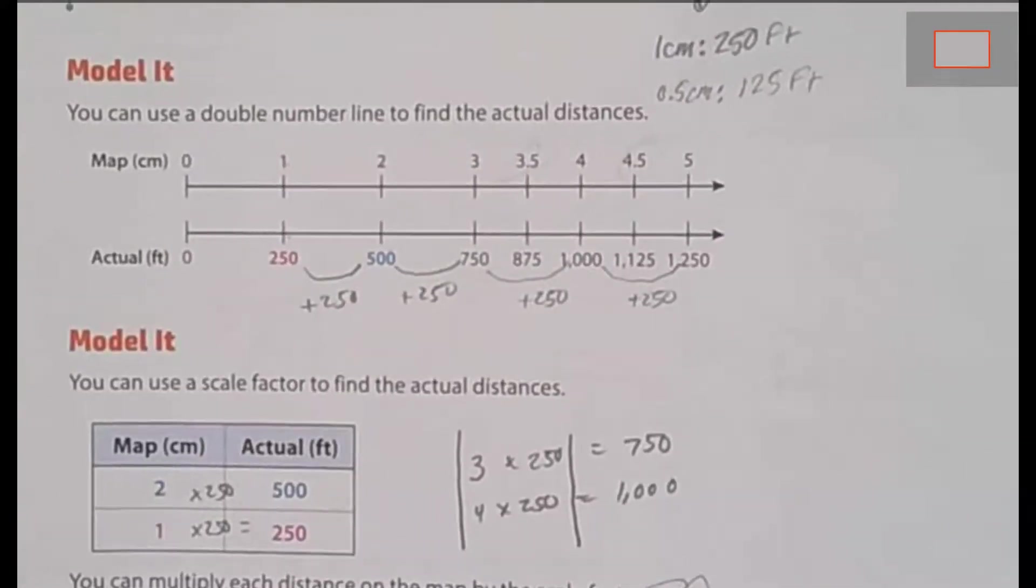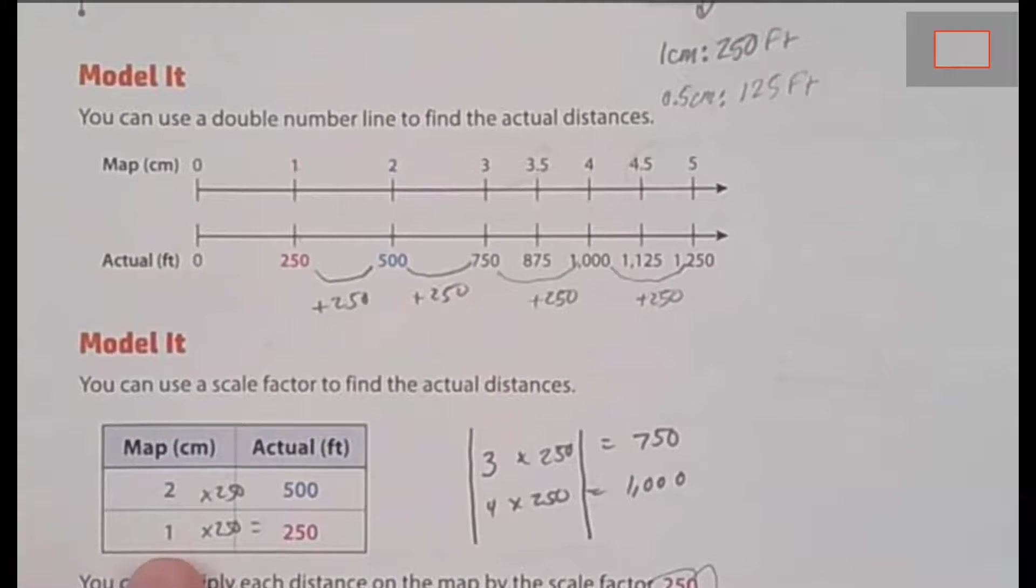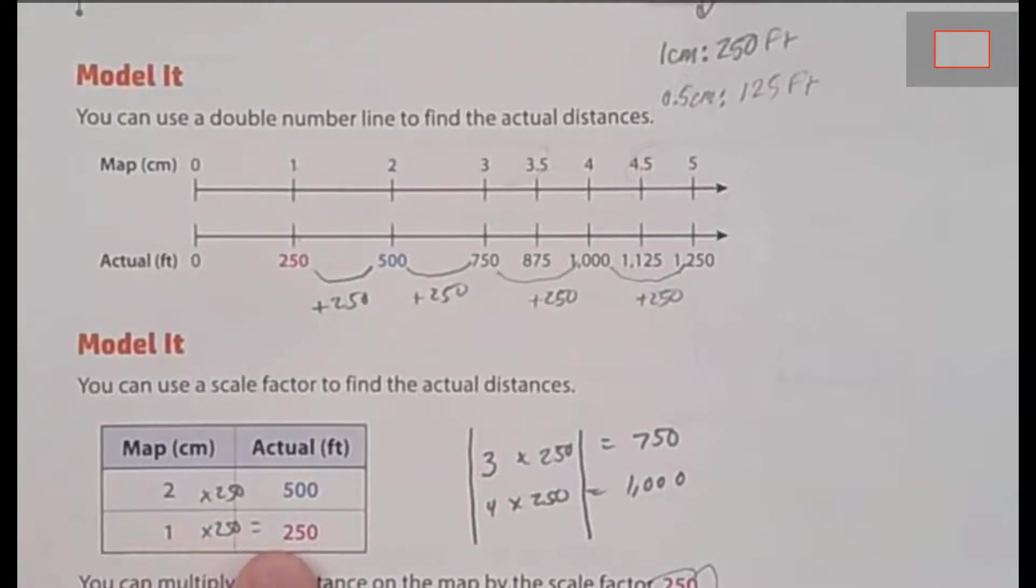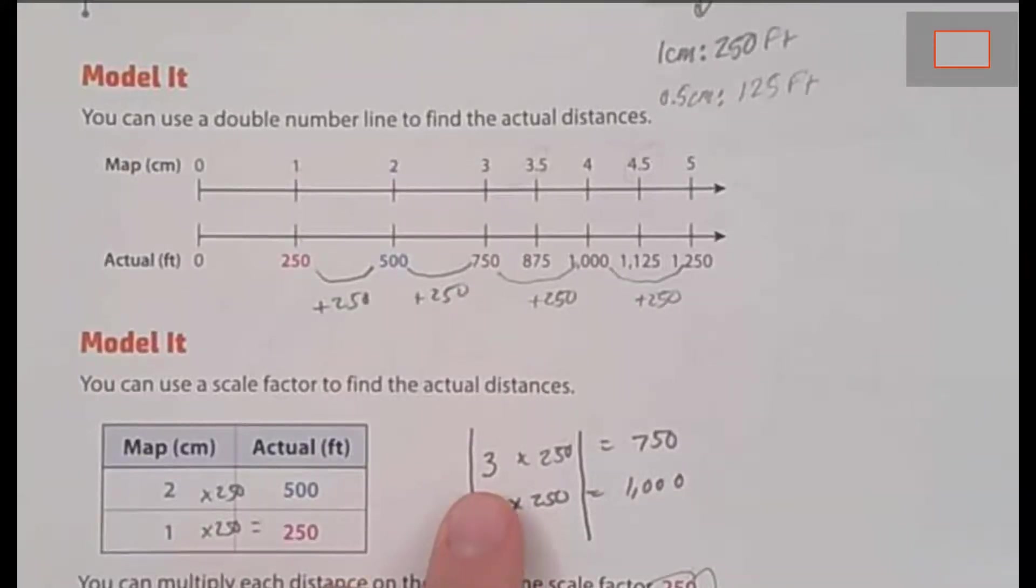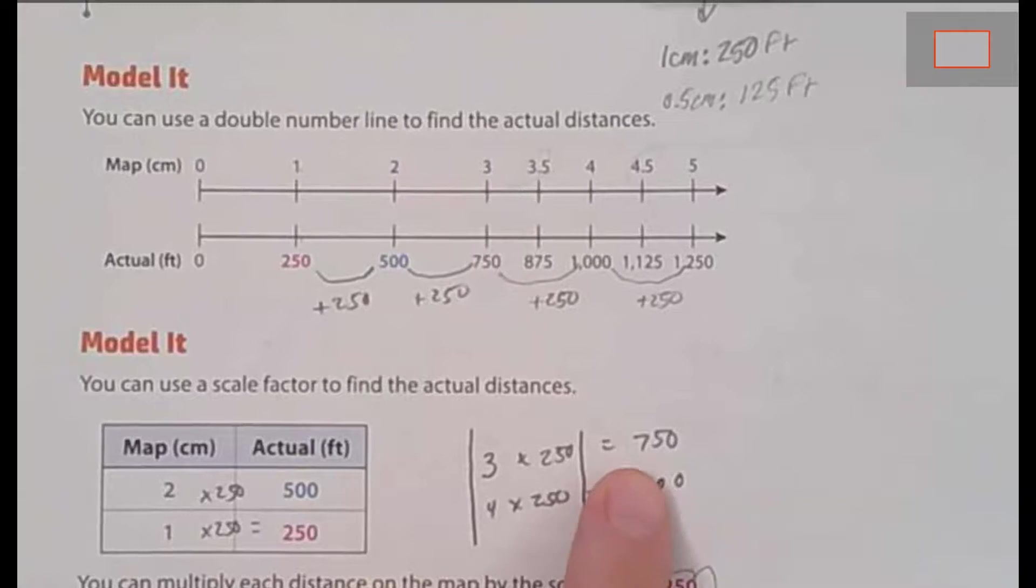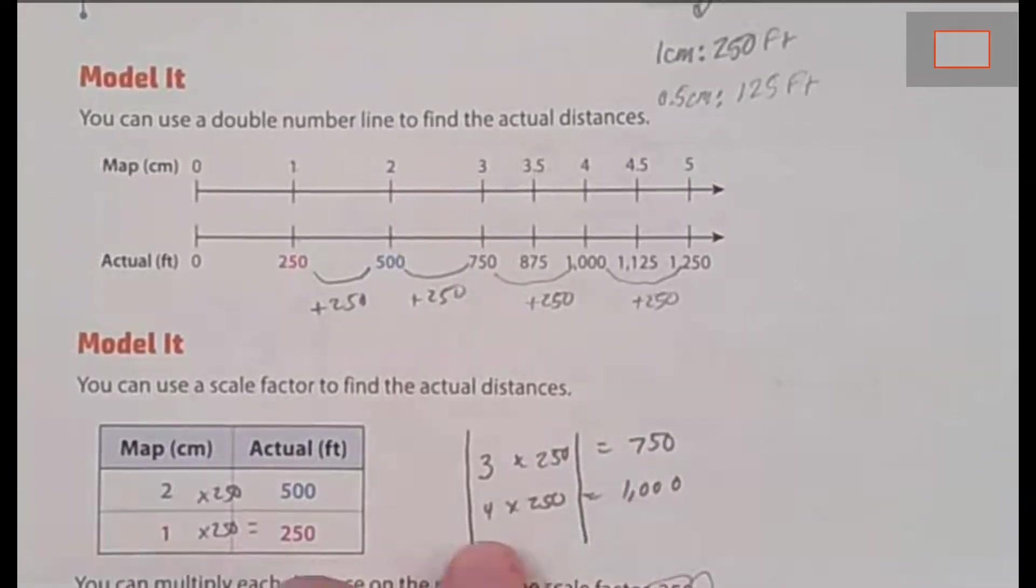Another way you can model it is by making a table, and you'll notice in this table, 1 times 250 gets you to 250. 2 times 250 gets you to 500. Essentially, multiplying each distance by the scale factor of 250 will get you the actual distance.